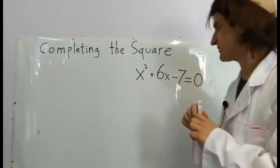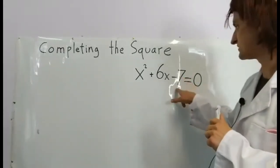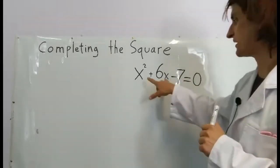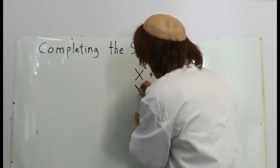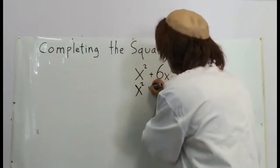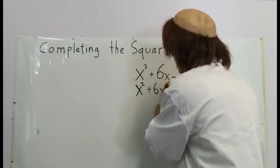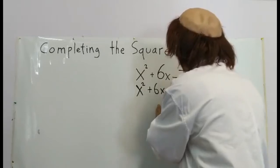Our first step is to move this number to the other side. We'll add 7 to both sides. That gives us x² + 6x = 7.